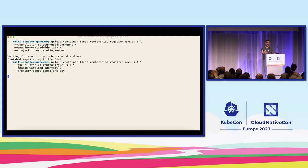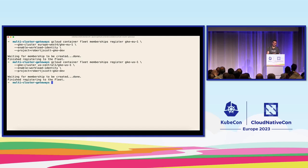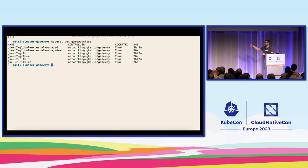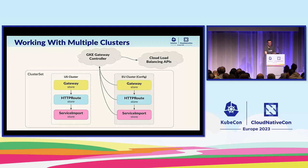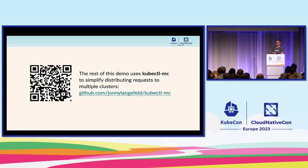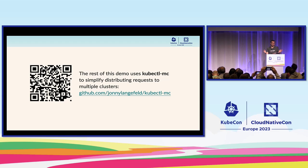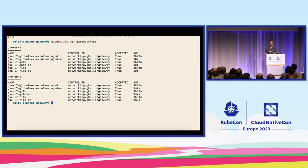Once we have the clusters up, we can register them to our fleet — which is just our term for a cluster set. Now that they're registered, we can get gateway classes. Look, we have some gateway classes available — the ones that end in dash MC mean they're multi-cluster enabled. We have more than one cluster here, so for most of the rest of this talk we'll be using a tool called kubectl-mc, which makes it easy to work with multiple clusters. It's just a loop that applies the same kubectl commands — get, apply, whatever — to multiple clusters as configured. Running the same command with kubectl-mc, you can see our US cluster and EU cluster both have the same gateway classes available.